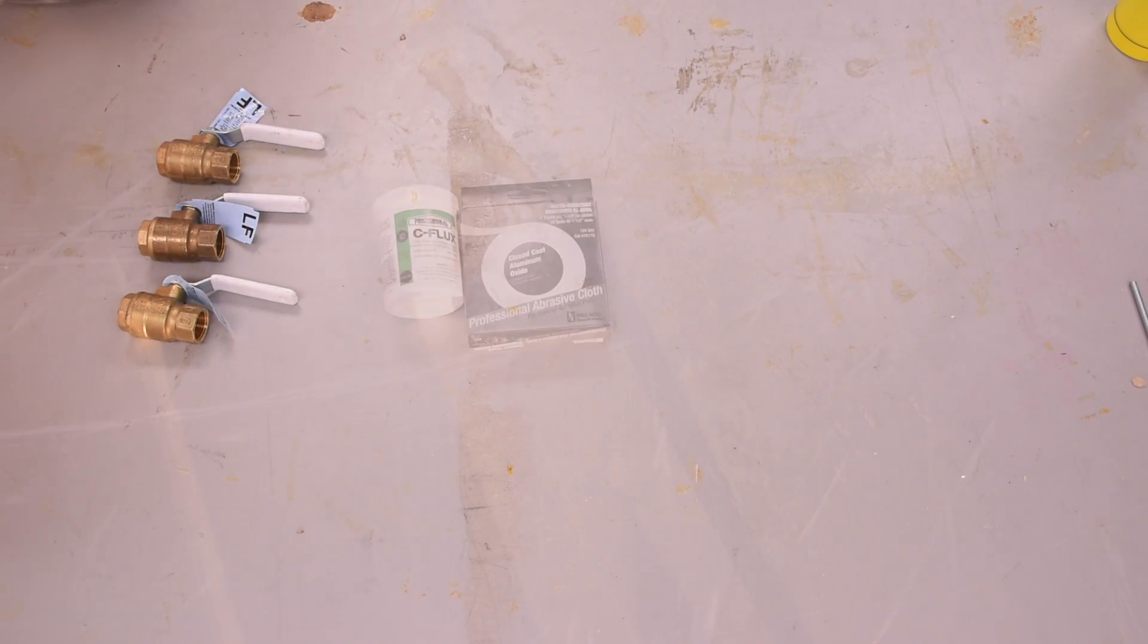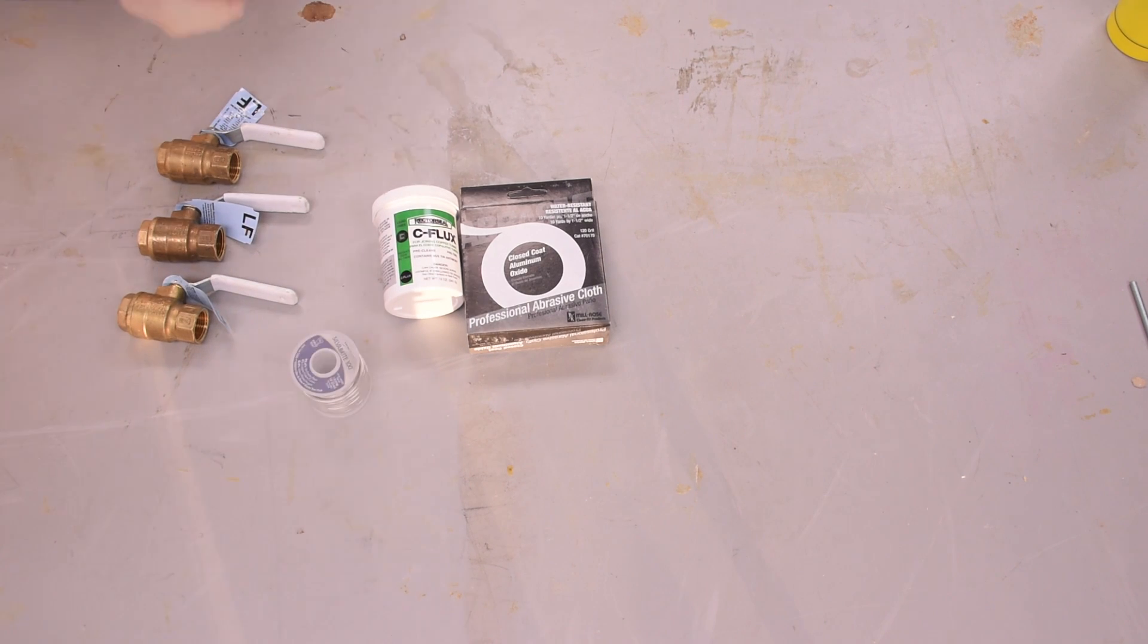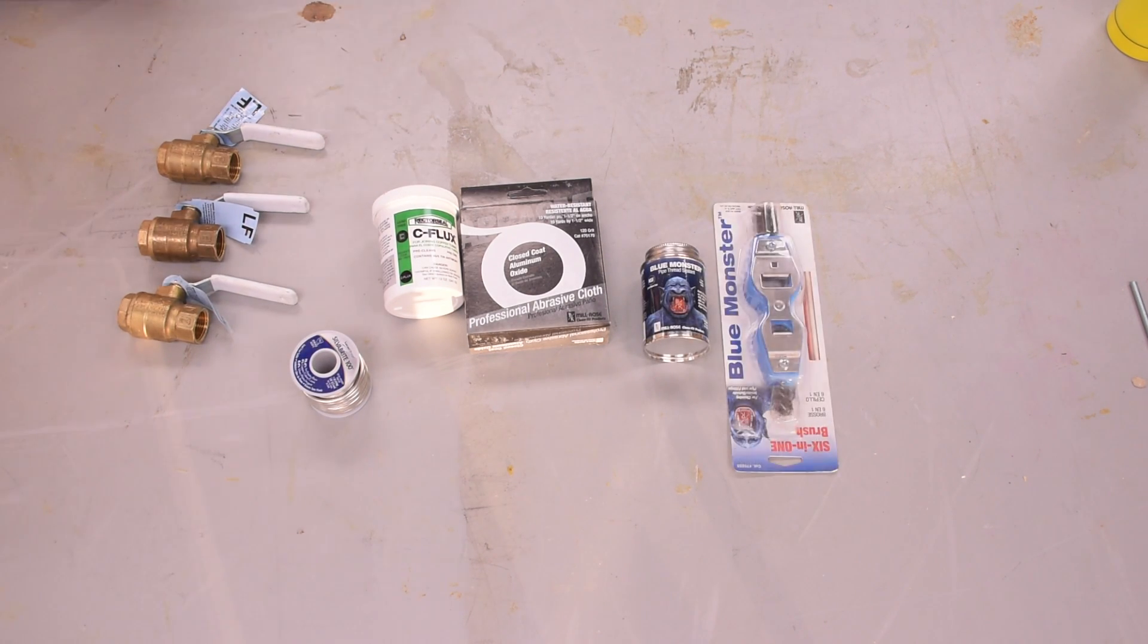You'll need your parts, some copper pipe flux and sandpaper, pipe solder, thread sealant maybe, a pipe brush, a tubing cutter, a deburring tool probably, and a whole bunch of fittings.